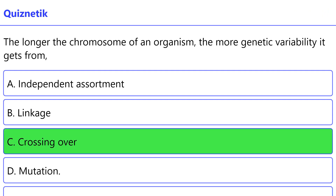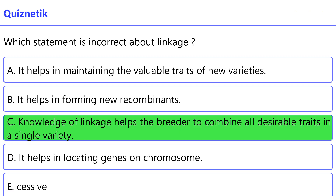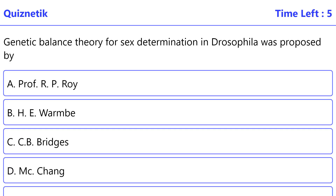Longer the chromosome of an organism, the more genetic variability it gets from the correct option is C: crossing over. Which statement is incorrect about linkage? The correct option is C: knowledge of linkage helps the breeder to combine all desirable traits in a single variety.